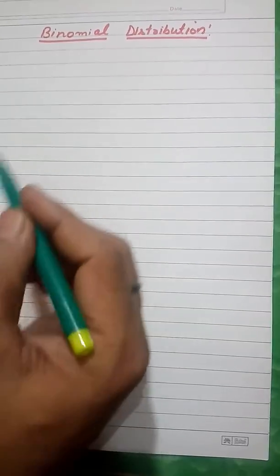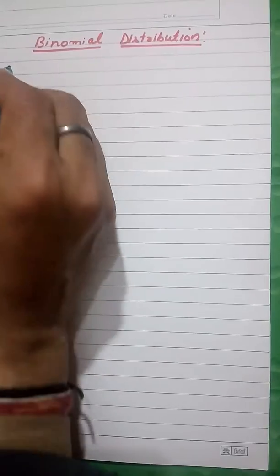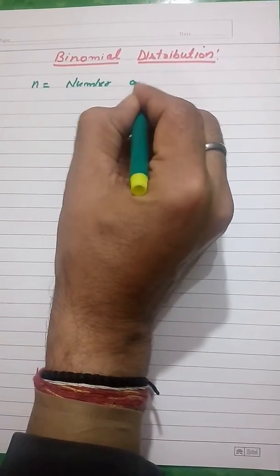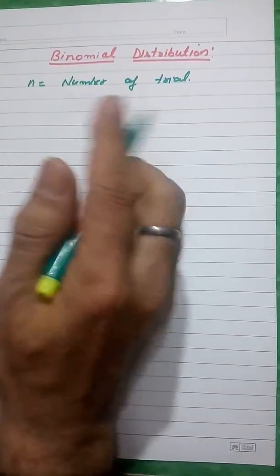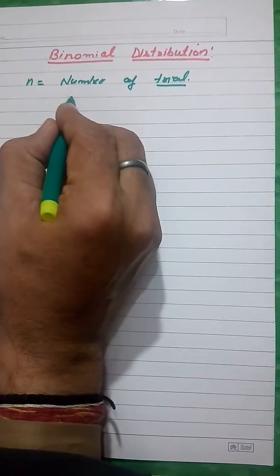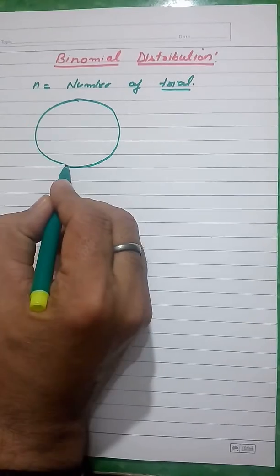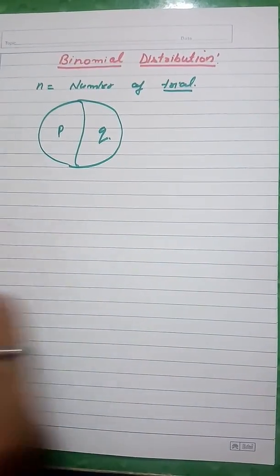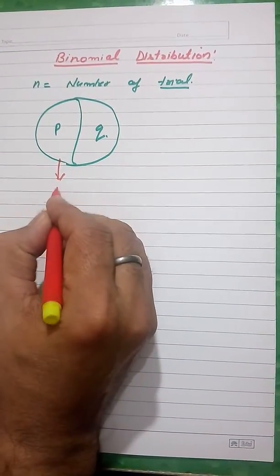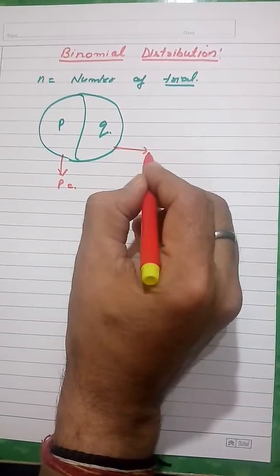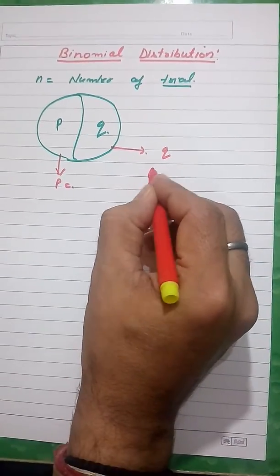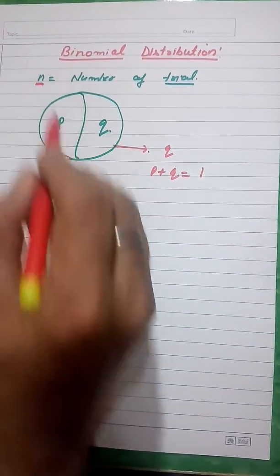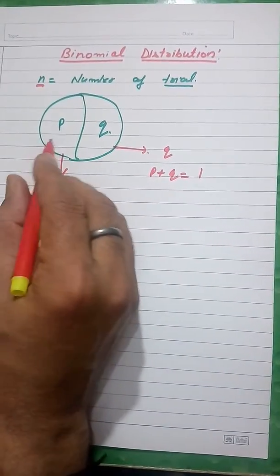Today we will discuss the binomial distribution. In the binomial distribution, suppose n number of trials are done in an experiment. Each trial is divided into two parts: either you will get success or failure. The probability of getting success is P and the probability of failure is Q, so P plus Q is always equal to one.